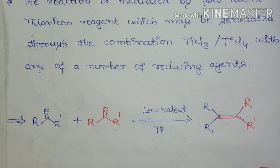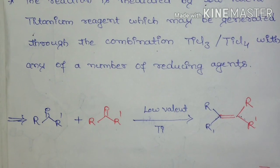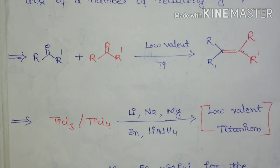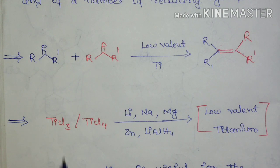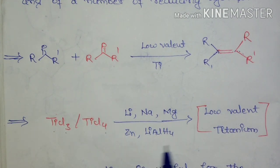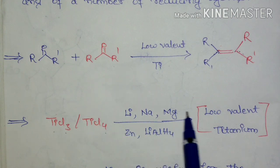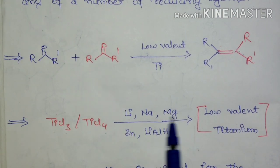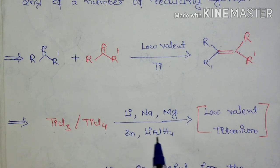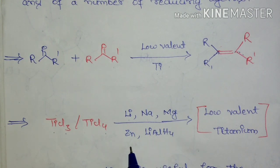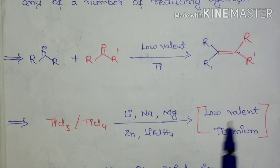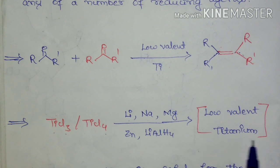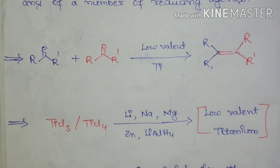How we are going to get this low-valent titanium reagent: titanium trichloride or titanium tetrachloride, upon treatment with any number of reducing agents like lithium, sodium, magnesium, zinc, or lithium aluminum hydride, will lead to the formation of the low-valent titanium reagent which is necessary for the coupling reaction.